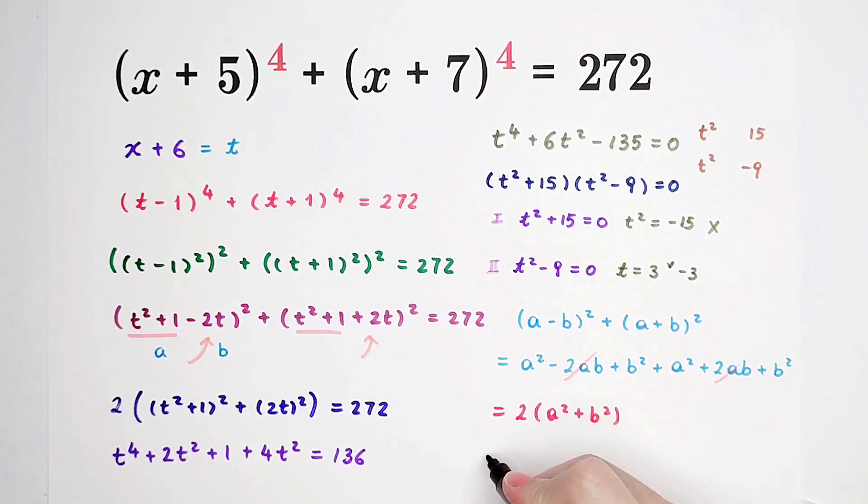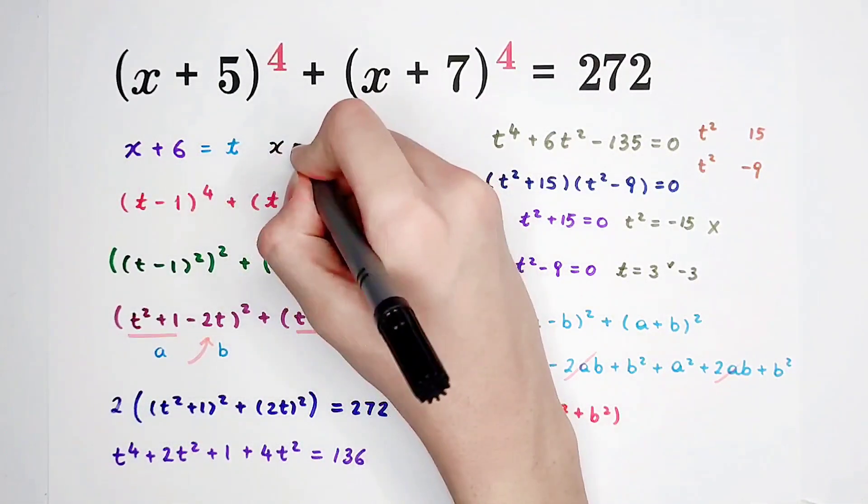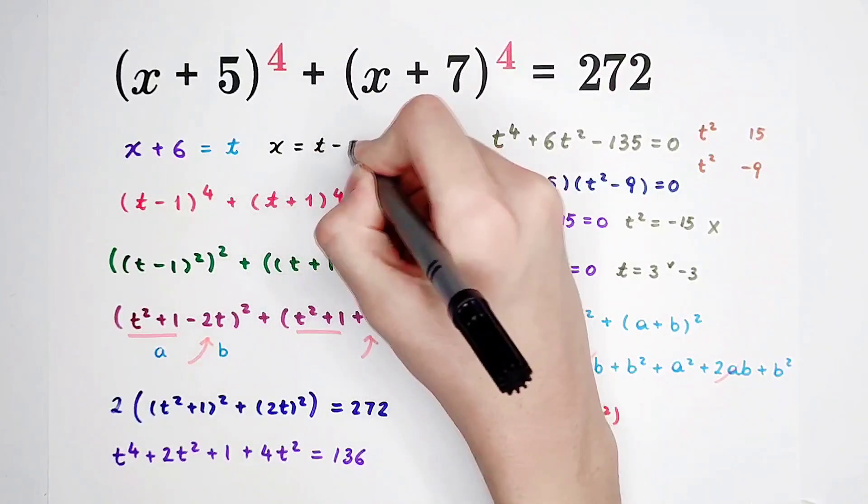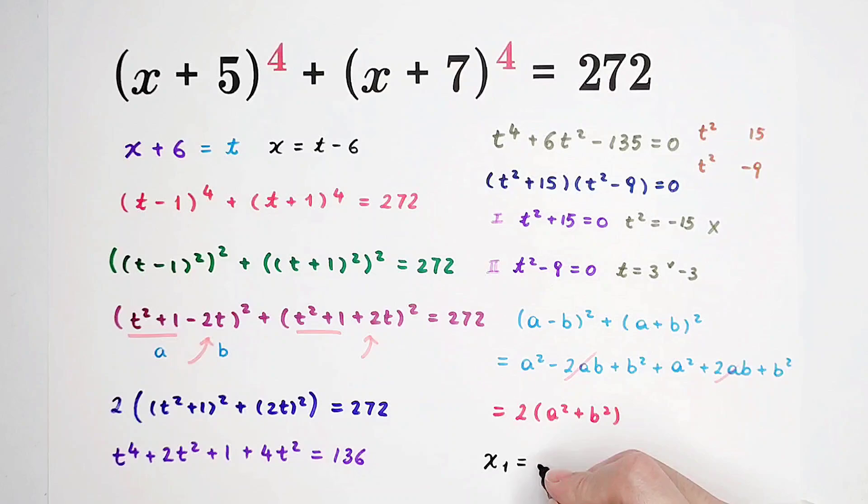Then we can find out the value of x. x is t minus 6. So x1 is 3 minus 6 is negative 3, and x2 is negative 3 minus 6, negative 9.